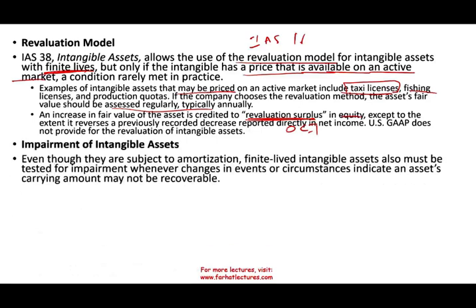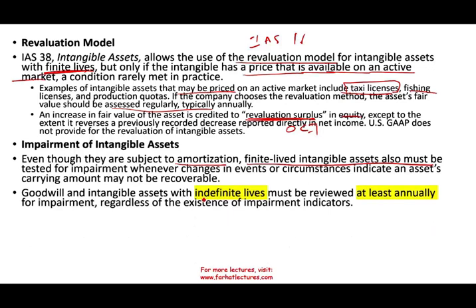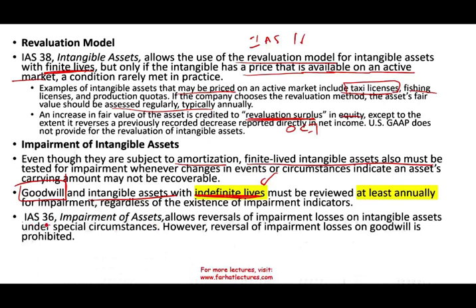Regarding impairment of intangible assets: even though finite life intangibles are subject to amortization, they must also be tested for impairment — similar to IAS 16. Goodwill and intangible assets with indefinite life must be reviewed and tested for impairment whether or not there is an indicator, because they are not amortized. For finite life assets, you wait for an indicator as in IAS 16. IAS 36 allows the reversal of impairment losses on intangible assets under special circumstances, but you cannot reverse any losses taken on goodwill.